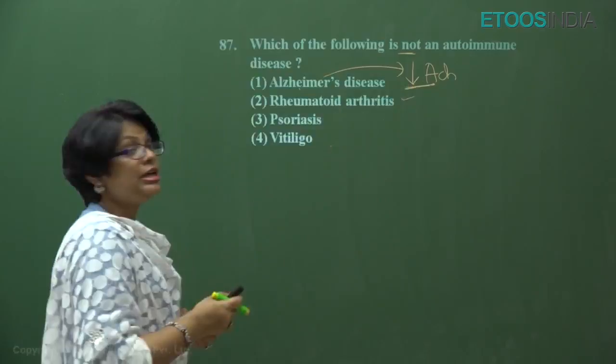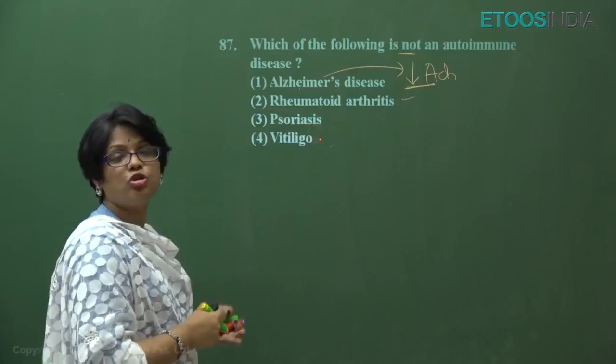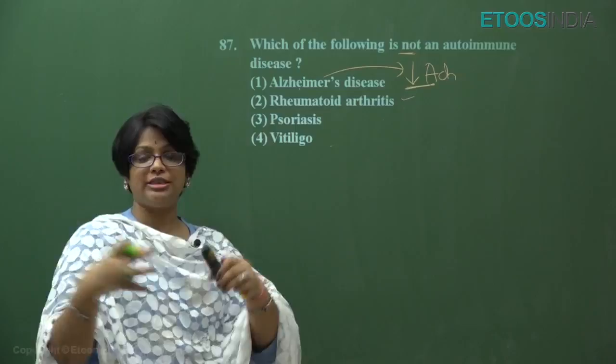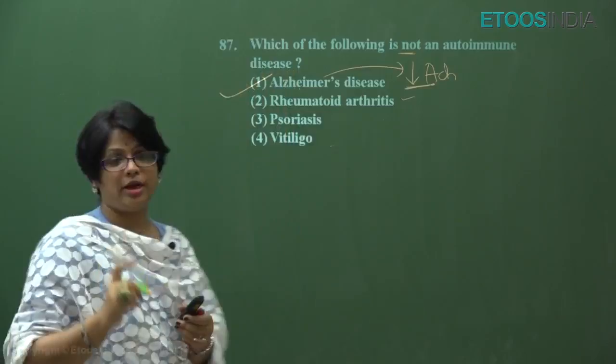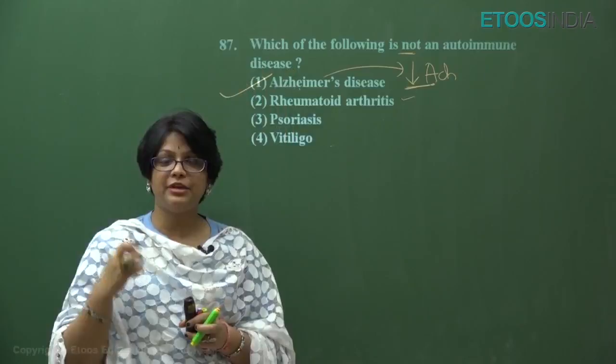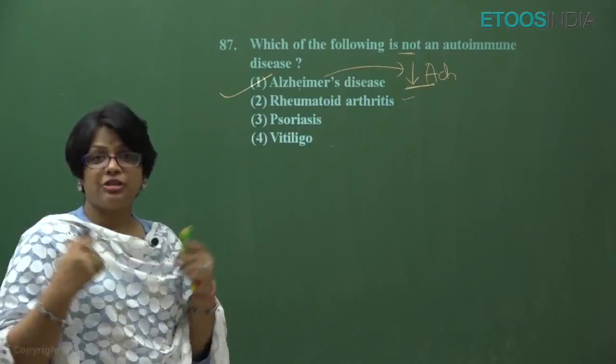Psoriasis is a skin disease also thought to be caused by autoimmunity. Vitiligo — white patches on the skin — is also a skin disorder found to be associated with autoimmunity. So basically the answer is option one, Alzheimer's.